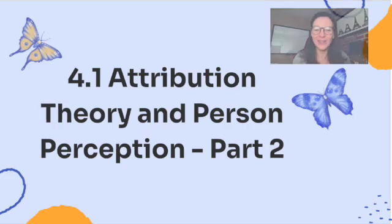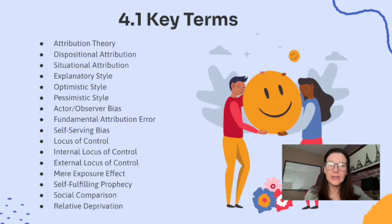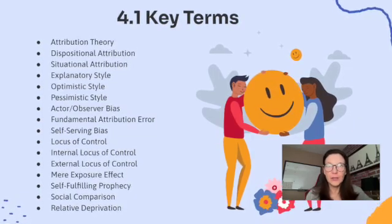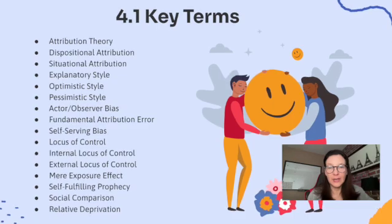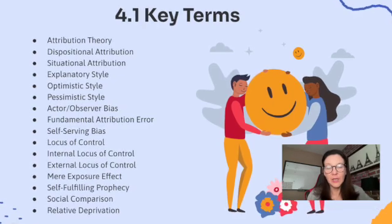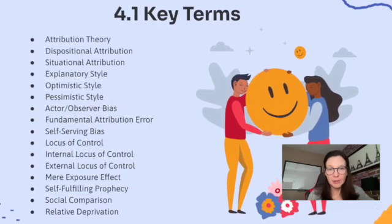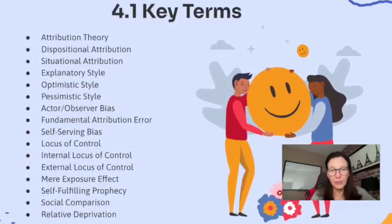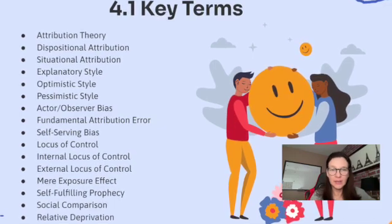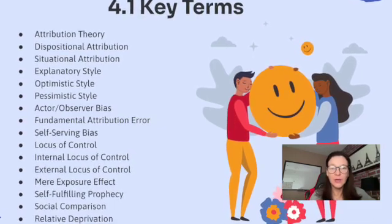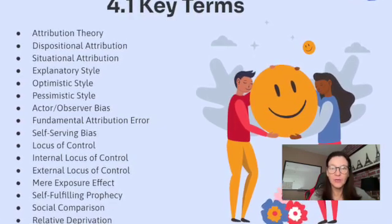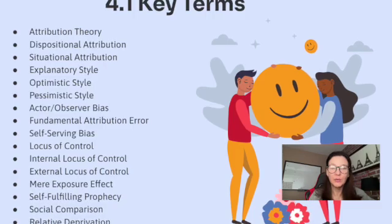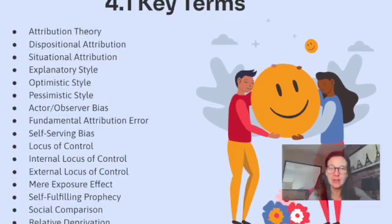Now let's get started. Here's a list of all the key terms that you're going to need to know for 4.1, attribution theory and person perception. I'm going to do a separate video where I put in the definition and real-life examples so that you can get your flashcards ready and understand how to apply them on test day.